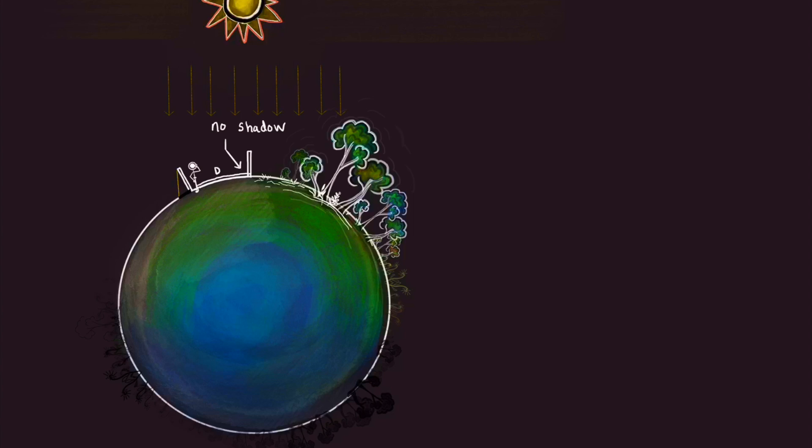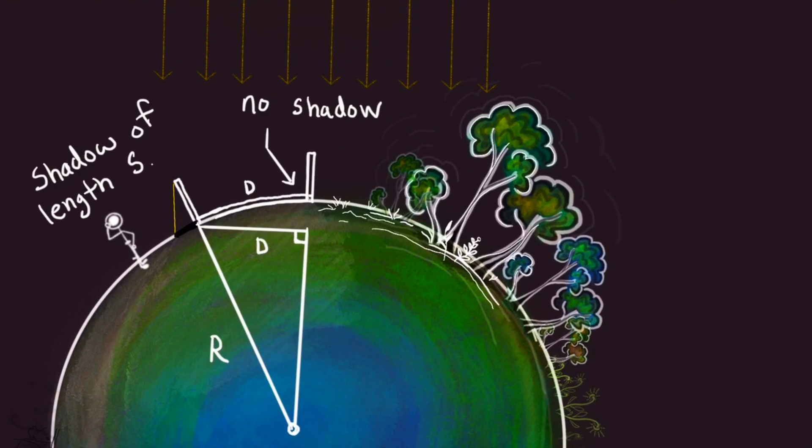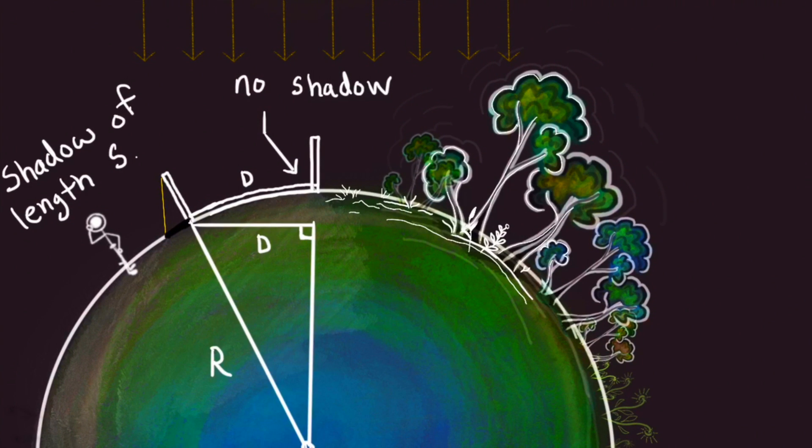We can use the length of the shadow to measure the radius of the planet. Now let's suppose that the shadow is of length S. Try to picture it. Here's the radius and the short leg of this right triangle is very close to the distance that I walked. That's a good approximation.